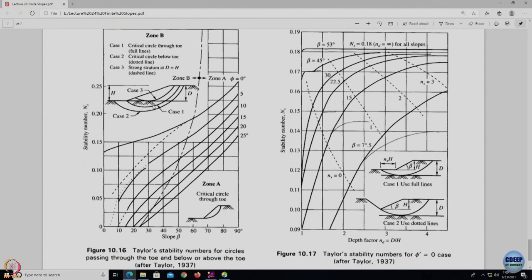There are 3 cases. The first case is passing through the toe, second is touching the hard strata intersecting the face of the slope, this is what is known as face failure, this is toe failure, and case 2 is depicted as the base failure for the same height. Stability numbers are defined based on zone A and zone B analysis. If you look at this line which is the dotted line starting from about 25 degrees, the right hand side zone is zone A, left hand side is zone B. Zone A is the critical circle passing through the toe and zone B has 3 cases.